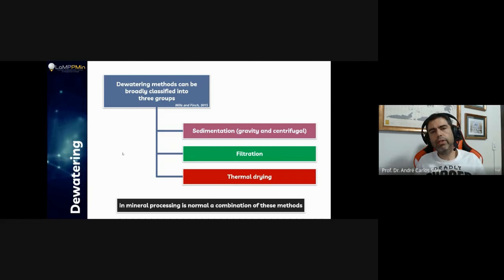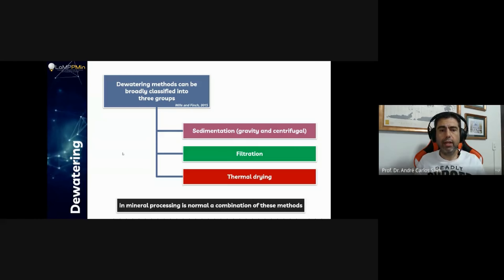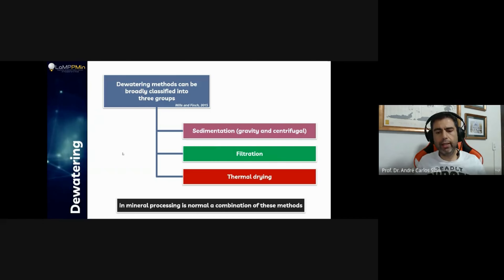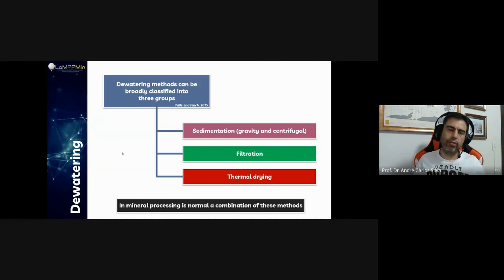Water supply and water quality are among our top five challenges — alongside fine particles and low grades. Even considering a move toward dry processing for some ores, we can't do that for all materials, so the need to use water in mineral processing plants remains. Moving entirely away from water to another fluid, like air, would be very difficult.